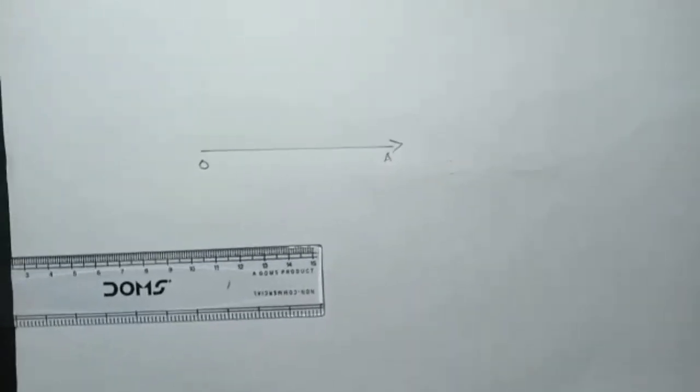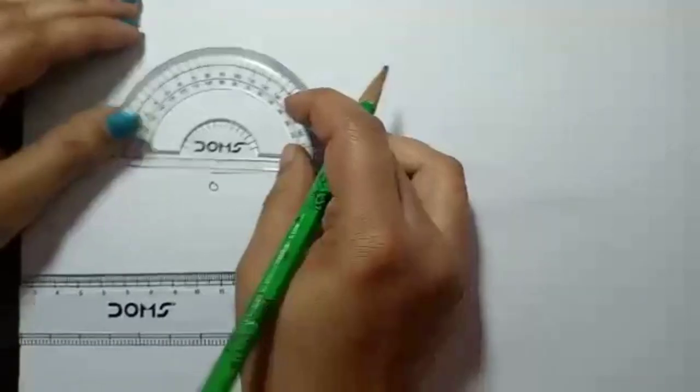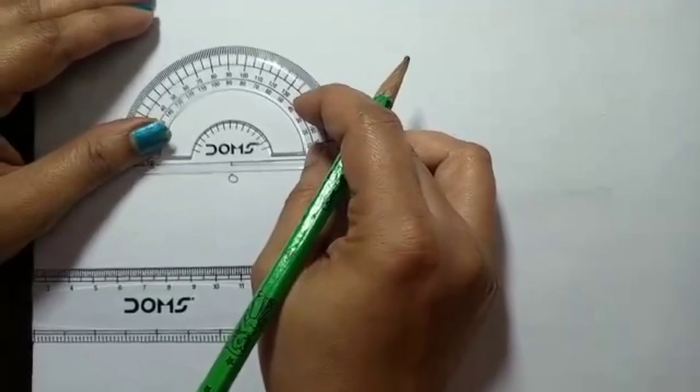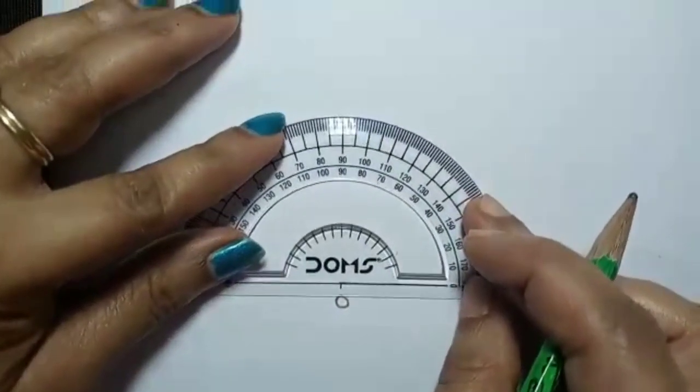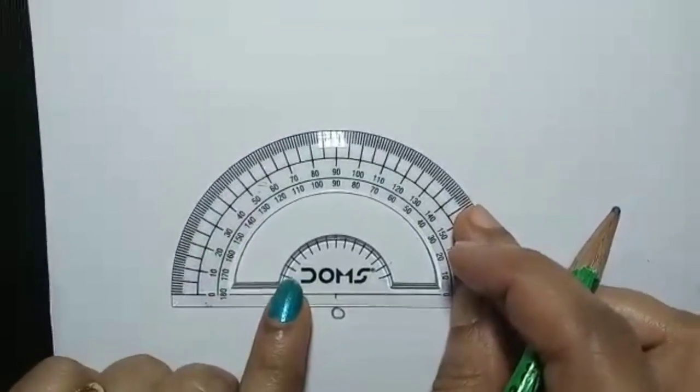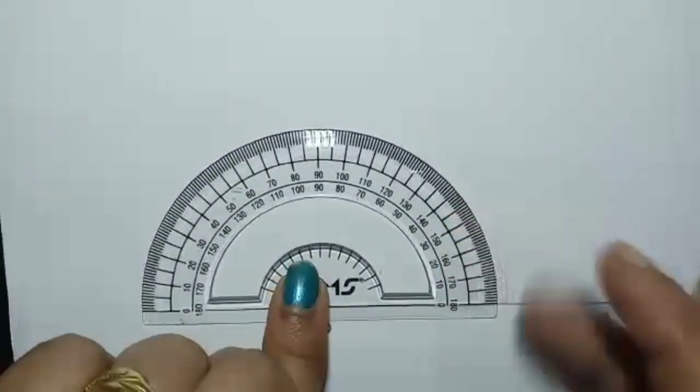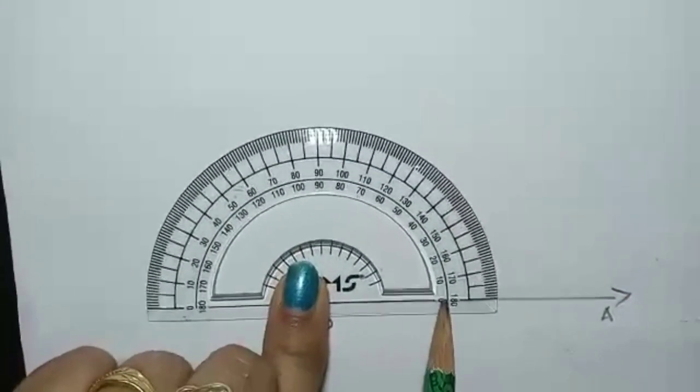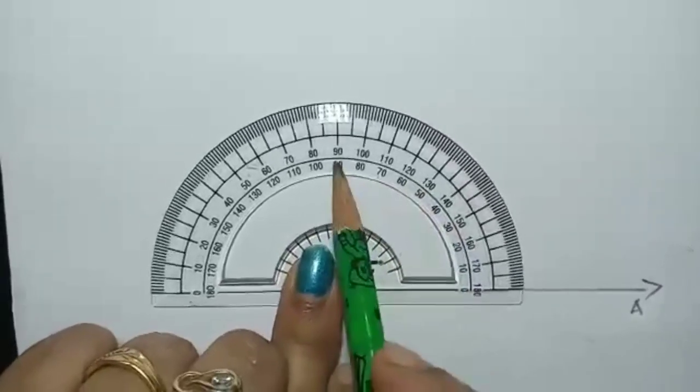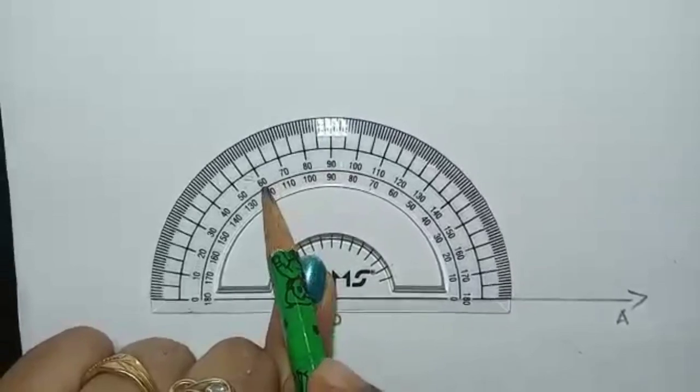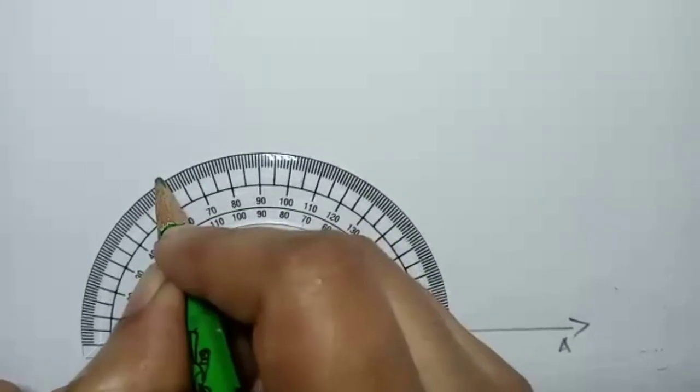Okay, so after that, I am going to mark a 120 degree angle. So for that, we have to start from here. 0 and here 0, 10, 20, 30, 40, 50. This is 90, 110 and this is 120. Just mark a point over there.